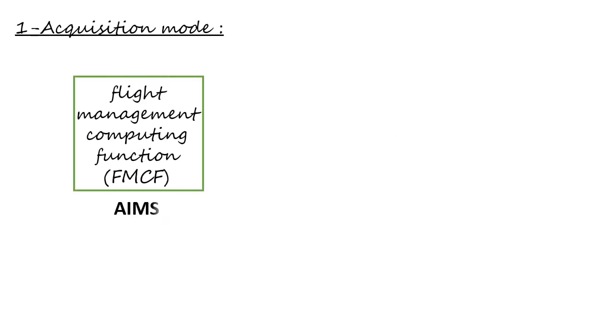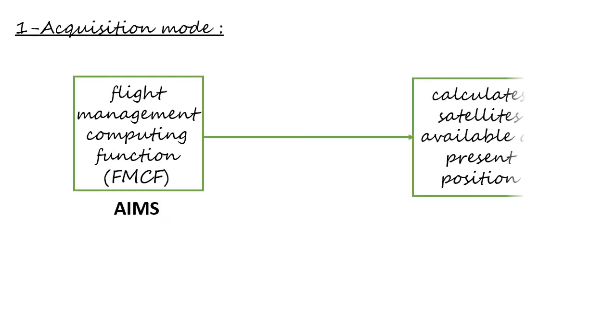In the acquisition mode, the MMR looks for and locks onto the satellite signals. The MMR must find at least 4 satellites before it starts to calculate GPS data.